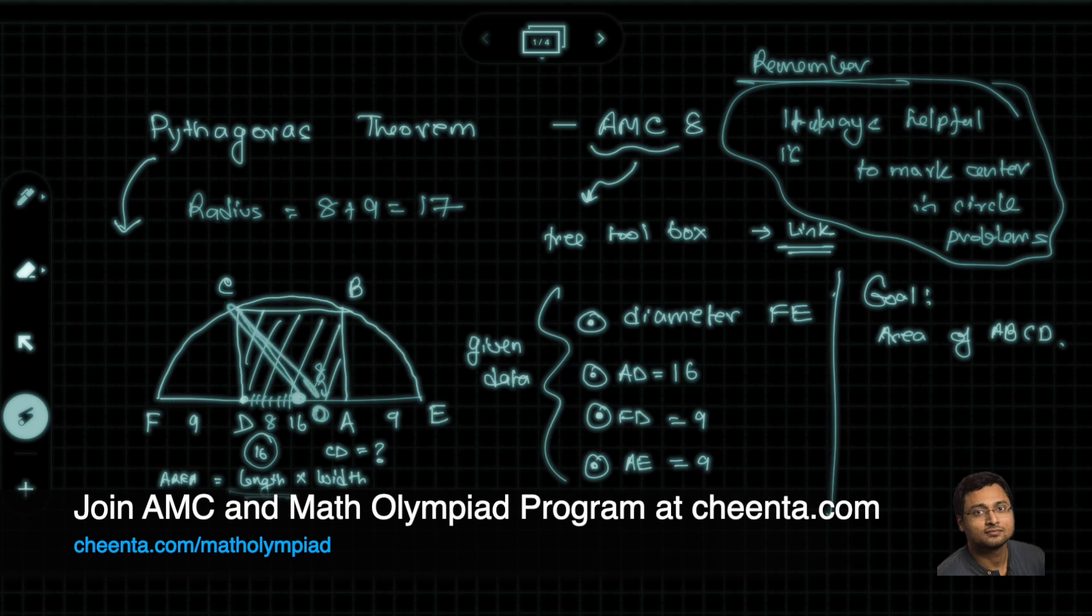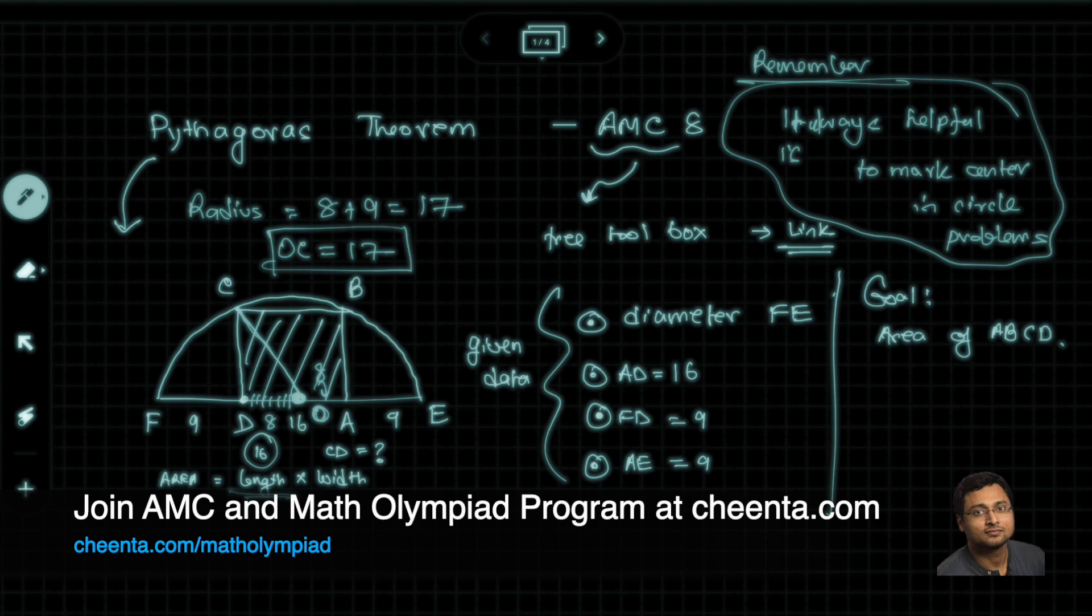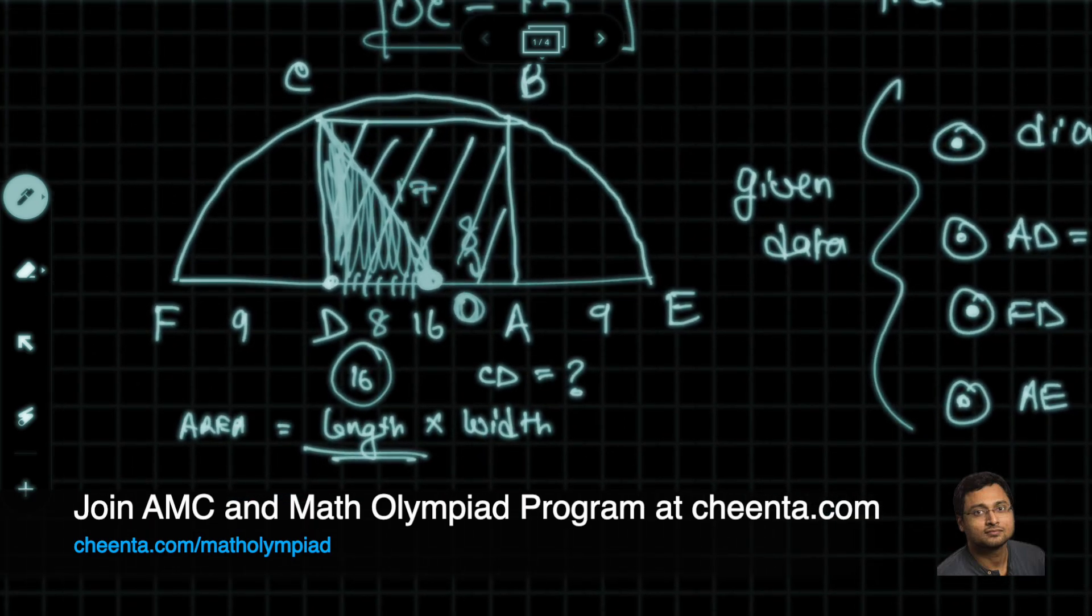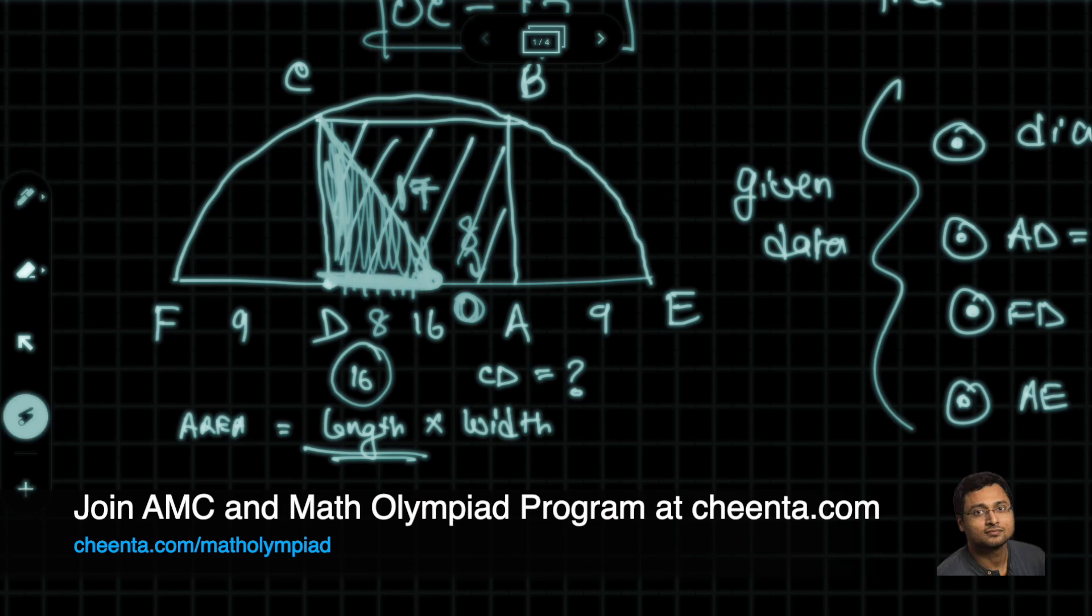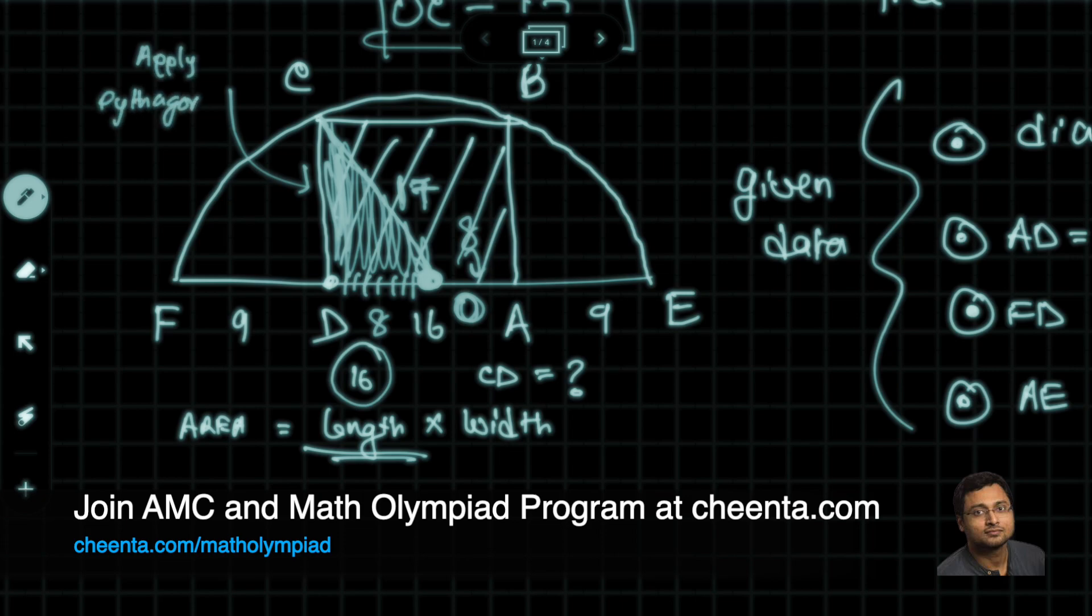Notice that OC is also a radius, right? O is the center, C is the point on the circumference. Clearly, OC is the radius. So OC is also 17. That's it. We are almost done. We can now apply Pythagorean theorem in this shaded triangle. We know OC is 17. We know OD is 8. So we can easily find CD.